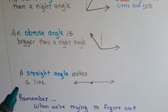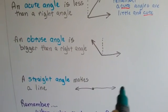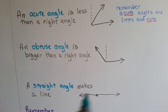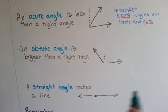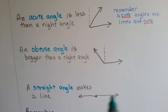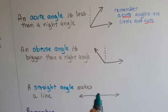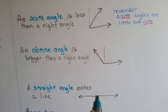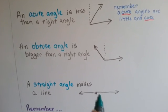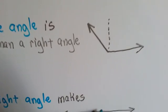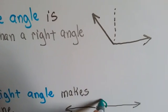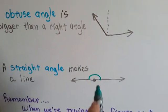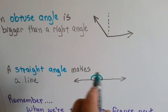A straight angle makes a straight line. It just lays flat on the ground like it's dead — it just makes a straight line with the center point there as its vertex, and the angle would actually be measured in that area right here.